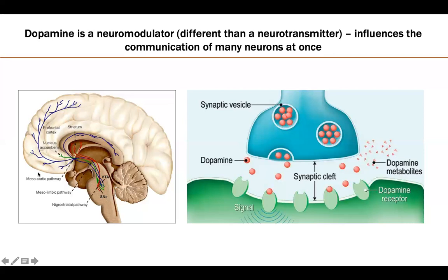No need to worry — just remember these three pathways and their functions. A few more important points: dopamine communicates through GPCRs — G protein-coupled receptors. This matters because these receptors take a longer time to kick in and can impact gene expression, making permanent changes in your brain and its activity. Dopamine is also influenced by glutamate — another neurotransmitter released together with dopamine, which is important for the health of our brain.